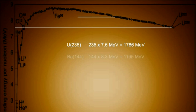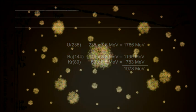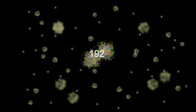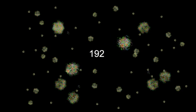While barium-144 has 8.3, and krypton-89 has 8.8, and the extra neutrons have no binding energy. So every time a nucleus of Uranium fissions, we get about 192 MeV of energy.